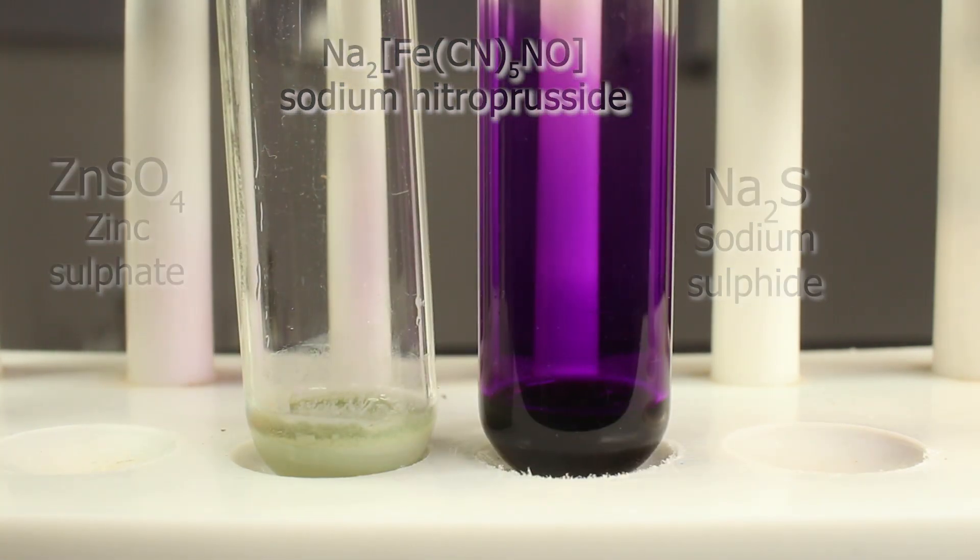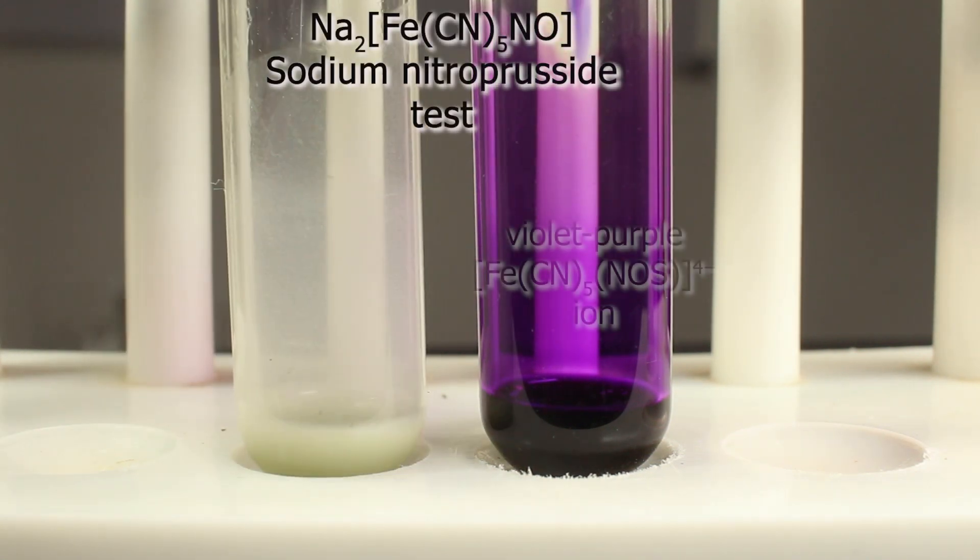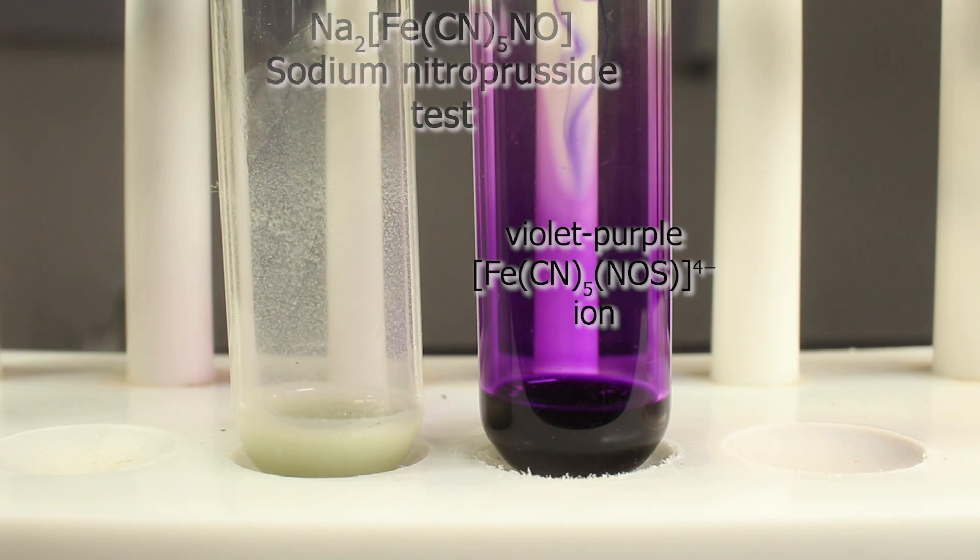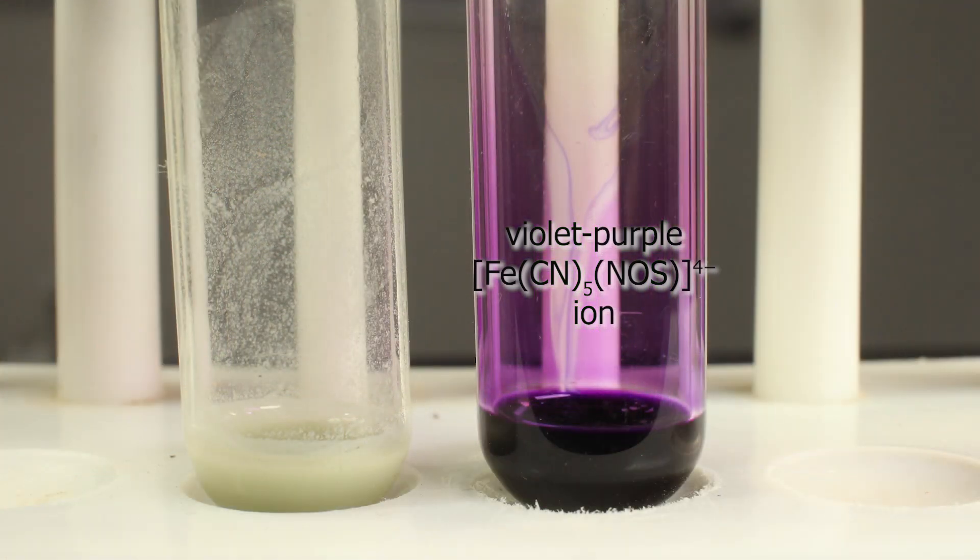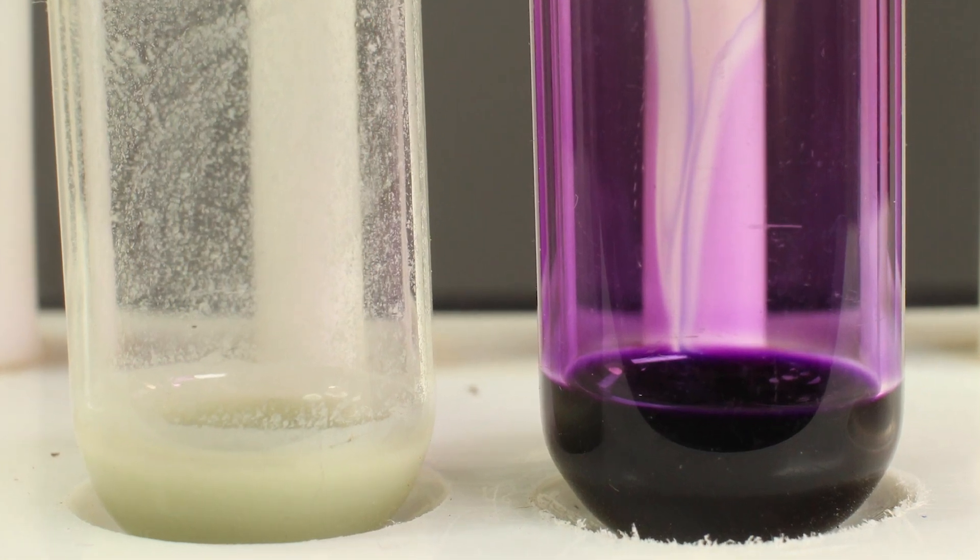Sulfide ion joined to nitrogen monoxide molecule in the complex, changing nitroprusside into theonitroprusside. Formation of violet purple color.